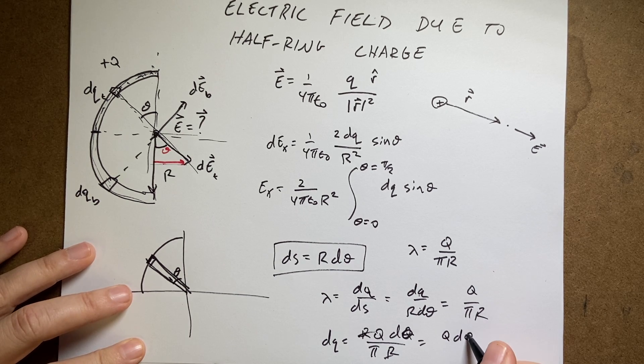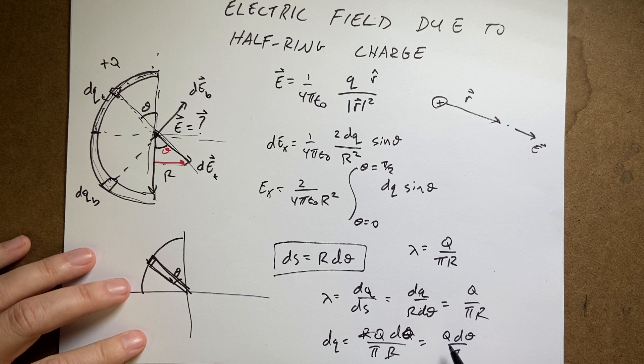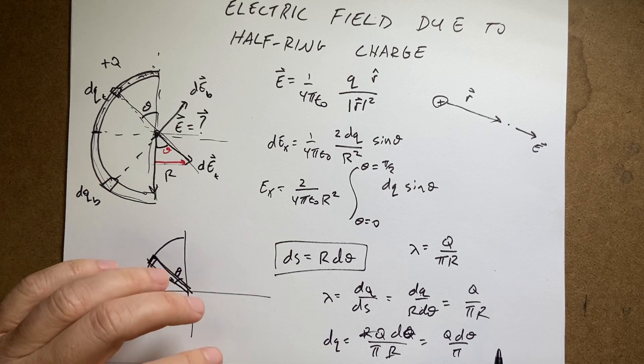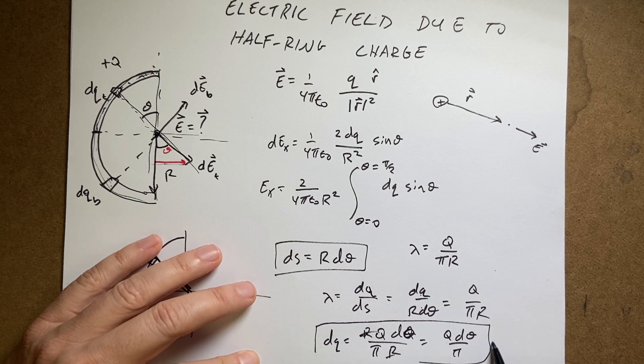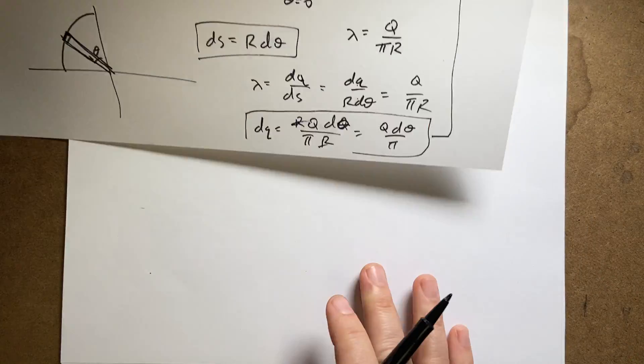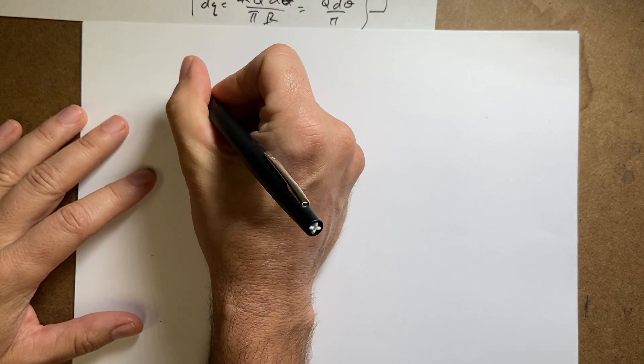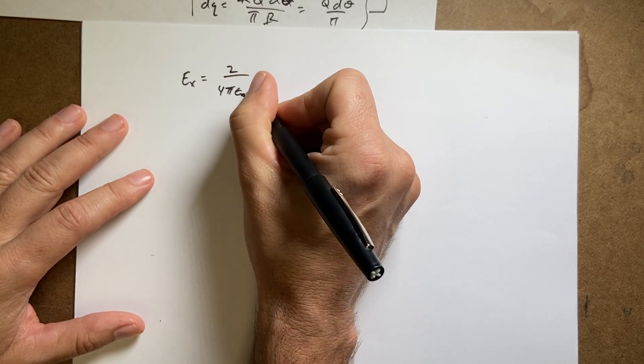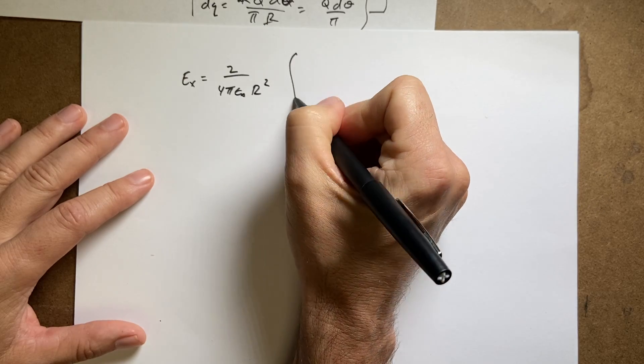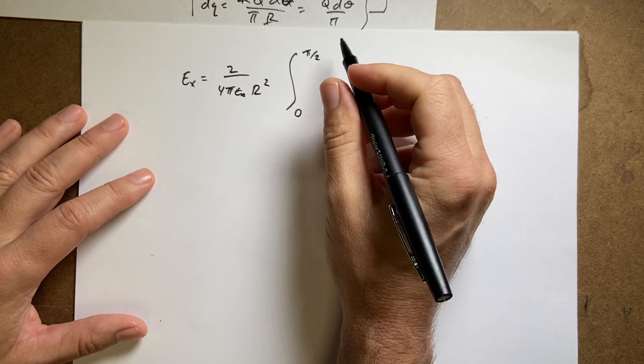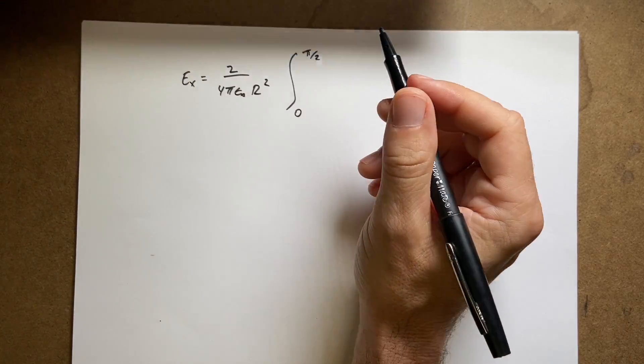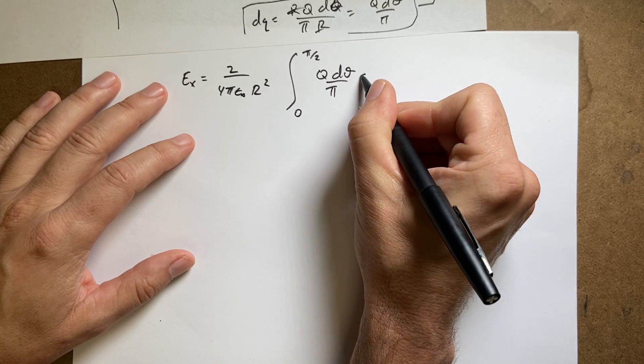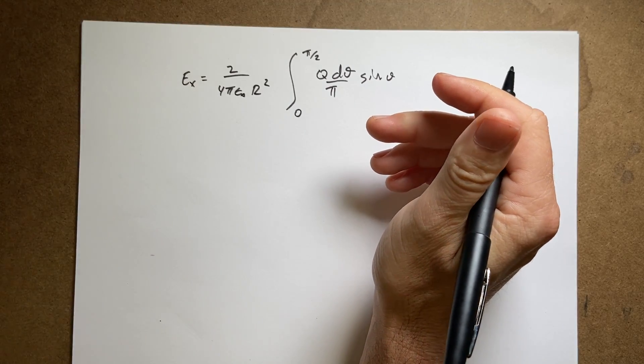That does have units of charge, because I want this to be still a charge. But now I can take this and substitute this in up here. Let's switch papers. So let me rewrite: Ex equals 2 over 4 pi epsilon naught r squared, and then I had 0 to pi over 2. Now I have dq. So I need to put in, instead of dq, I'm going to put this: q d theta over pi sine theta.